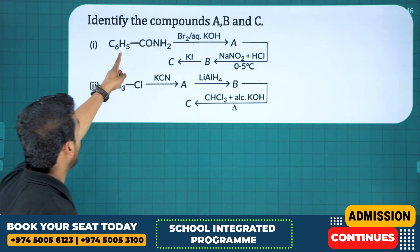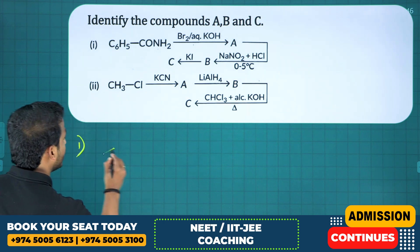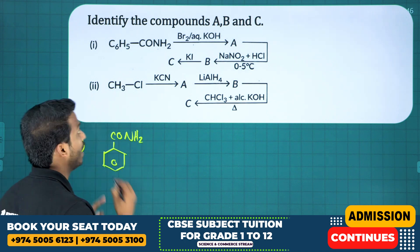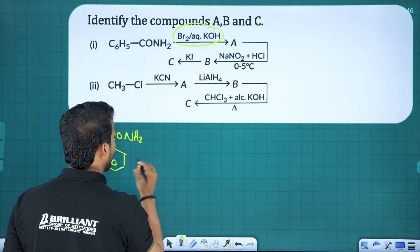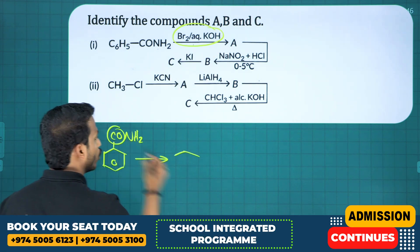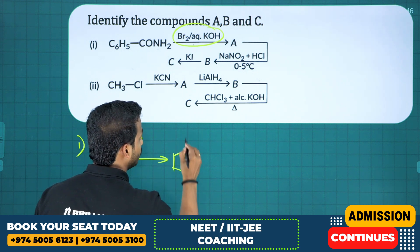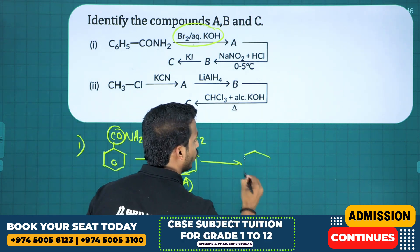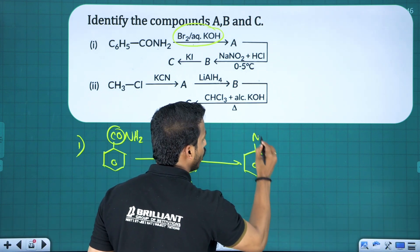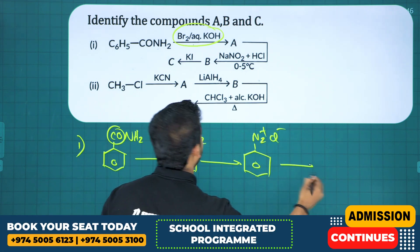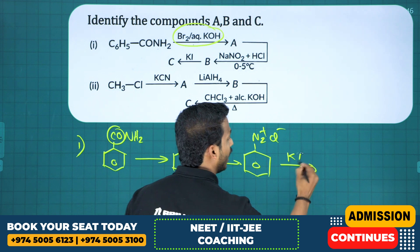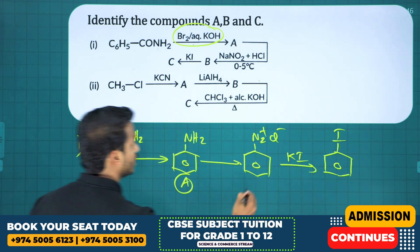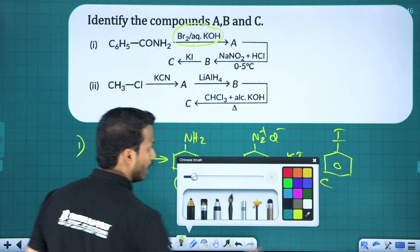Next: compound A is C6H5CONH2 — benzamide. Benzamide on Hofmann degradation: the CO group is removed, giving aniline (compound A becomes aniline). Aniline on diazotization gives diazonium salt (N2+Cl-). Diazonium salt treated with warm KI gives iodobenzene — that is compound B and C respectively.